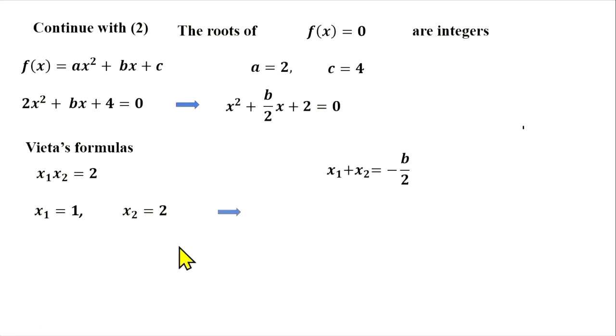Then the sum will be 3 equal negative b over 2. From here we have b equal negative 6.